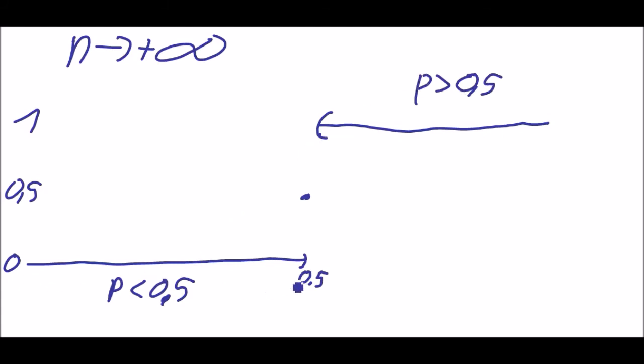This is how this would distribute for n goes to infinity. So if you play a really large number of sets, then you will win the match almost certainly.